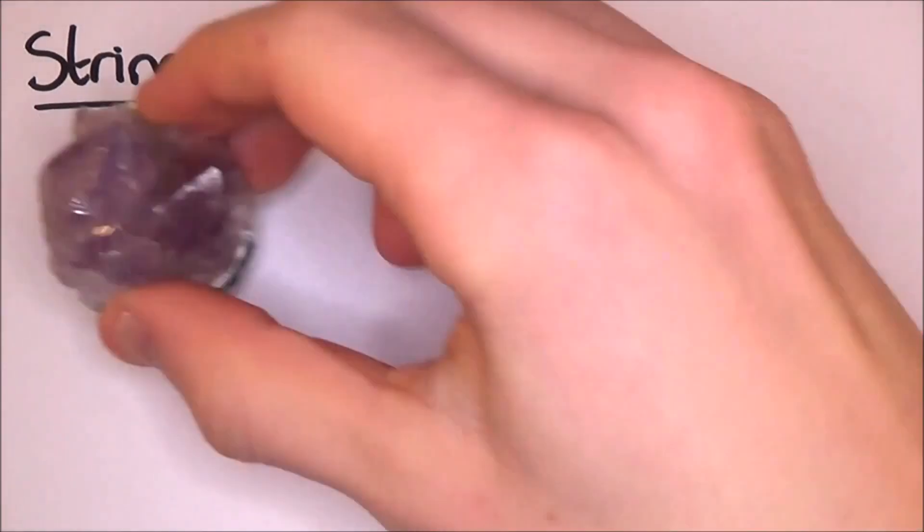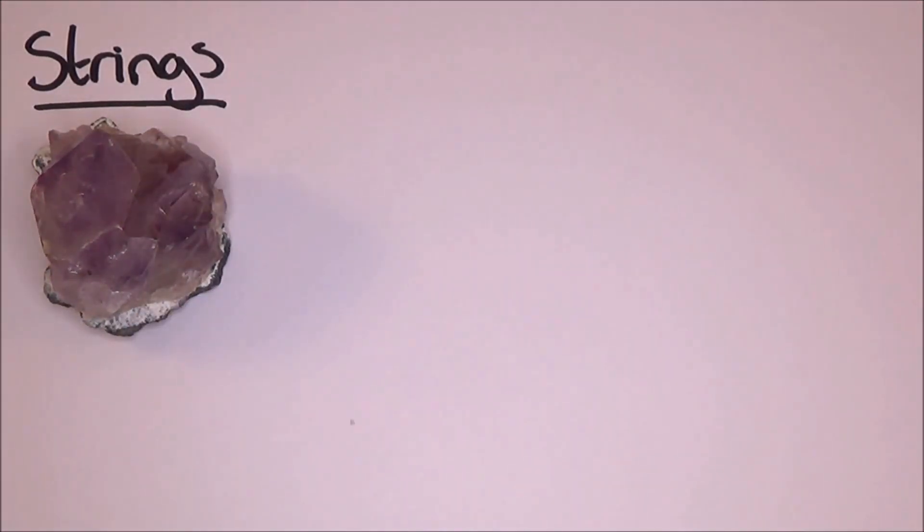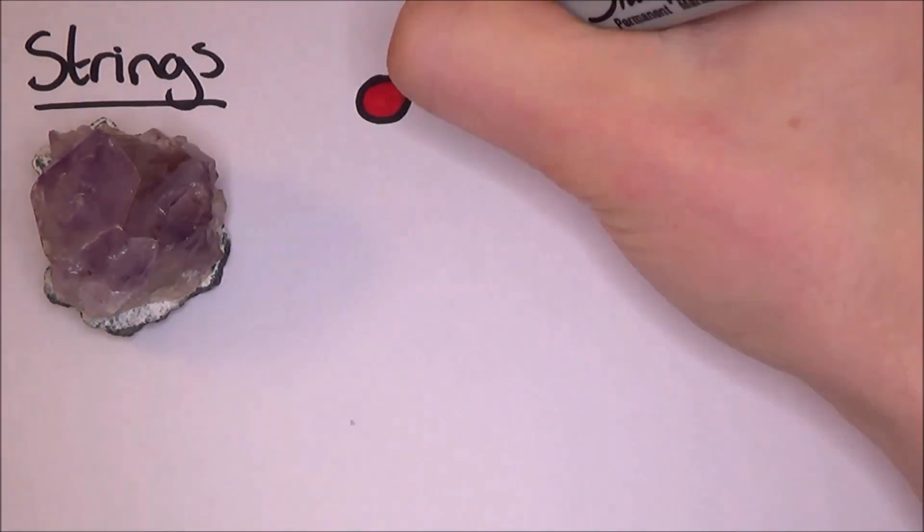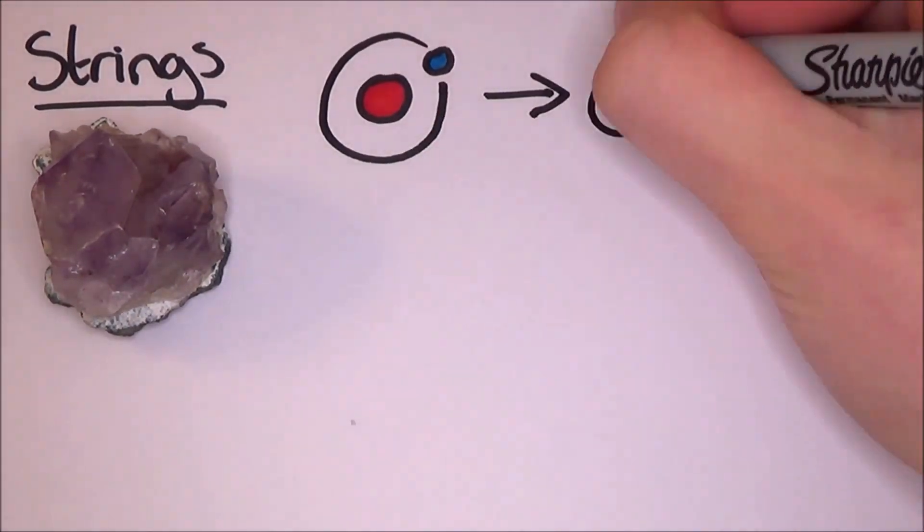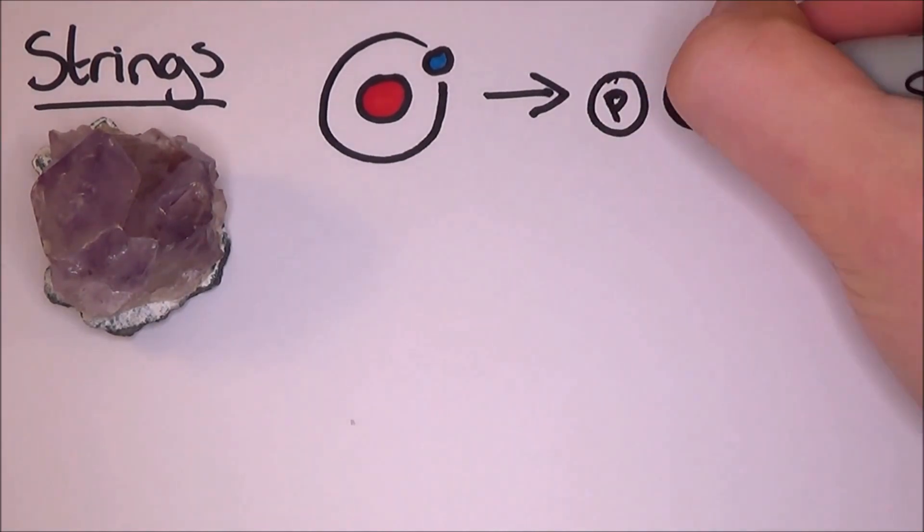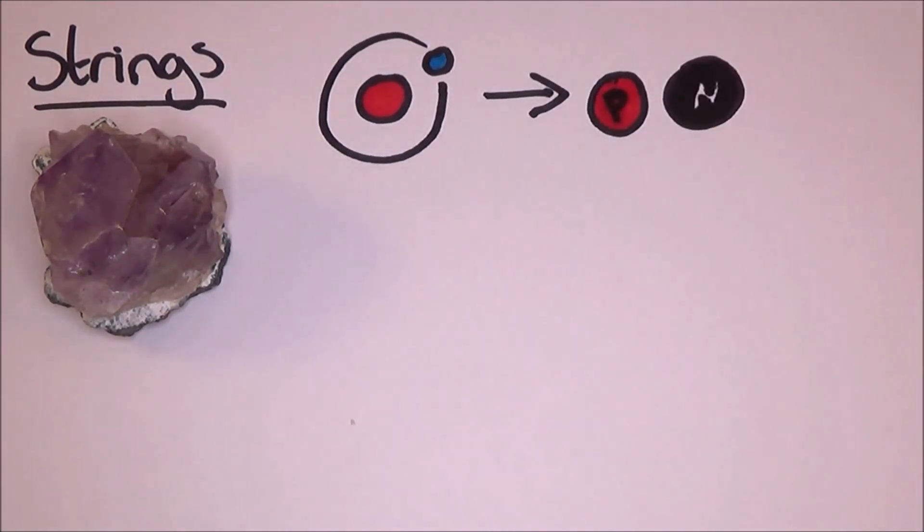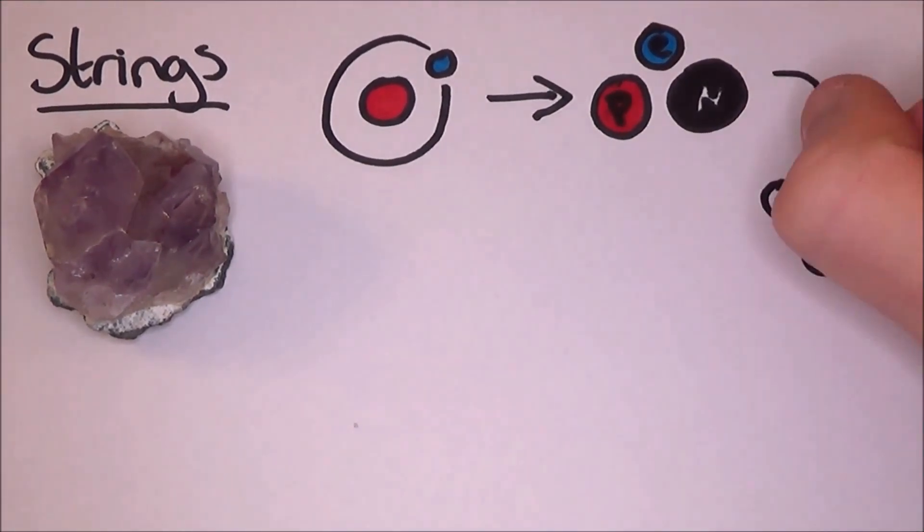Now, on the other side of string theory, the actual strings. If you imagine a nice crystal, in fact, don't imagine it. Here is my crystal. The crystal is made up of billions of atoms, which are all made up of smaller bits of matter: electrons, protons and neutrons. Then the protons and neutrons are made up of even smaller bits of matter, called quarks. But this is when string theory takes over.